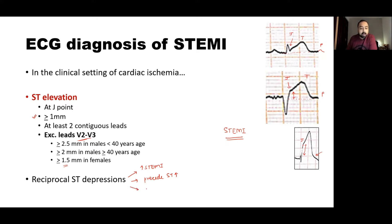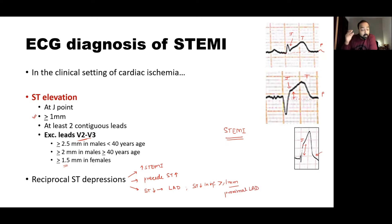Sometimes the amount of ST depression actually helps you assess how much myocardium is at risk. For example, in a left anterior descending occlusion, if ST depressions in inferior leads are more than 1 mm, it is suggestive of a proximal LAD occlusion — meaning more of the left ventricle is at risk of cardiac ischemia and infarction.